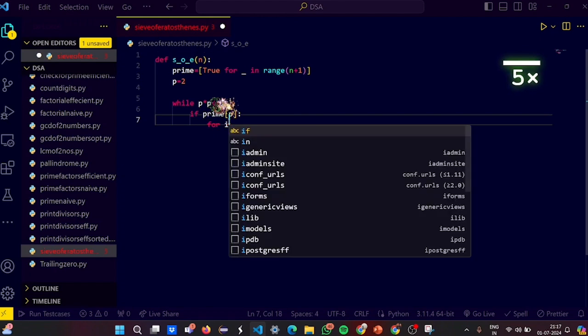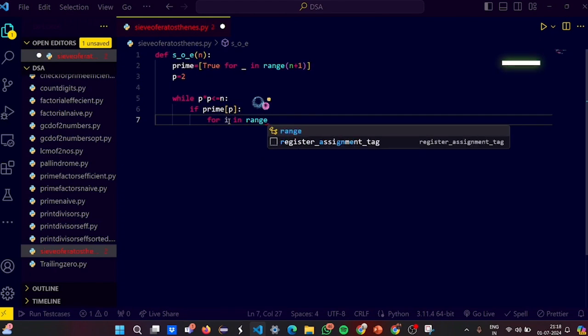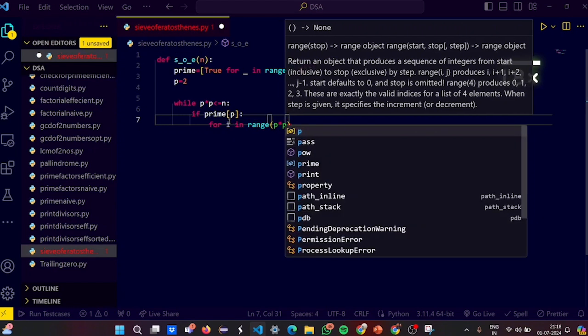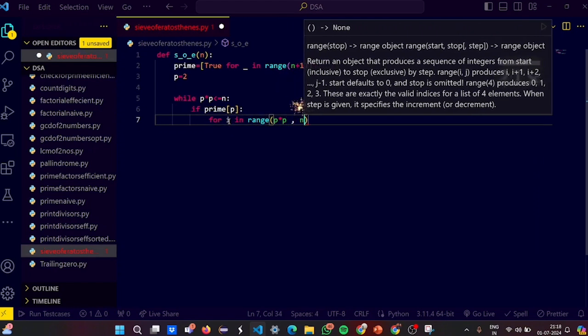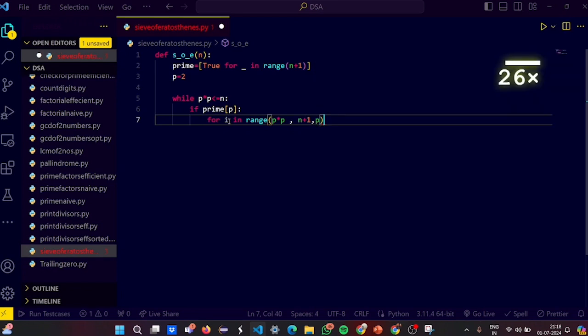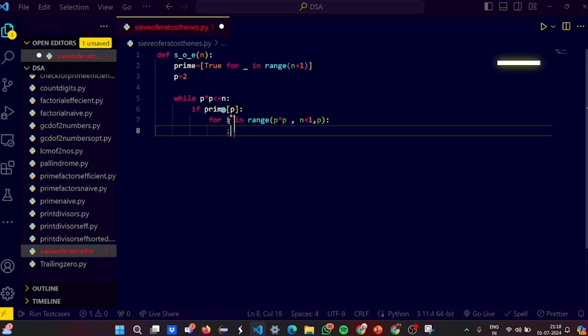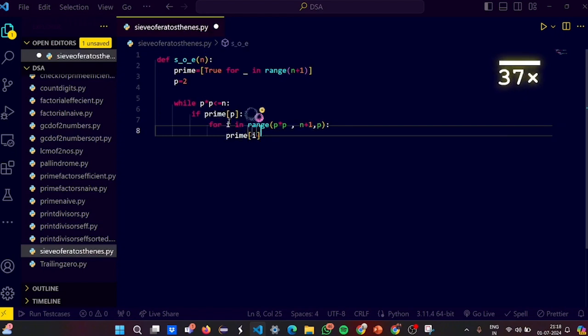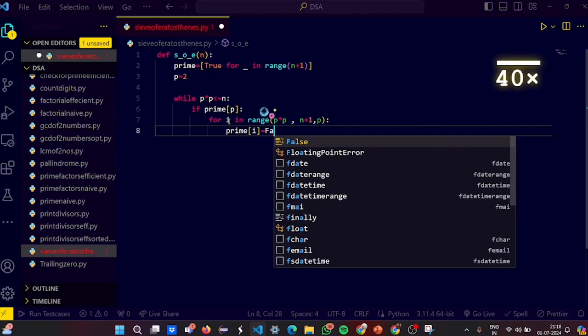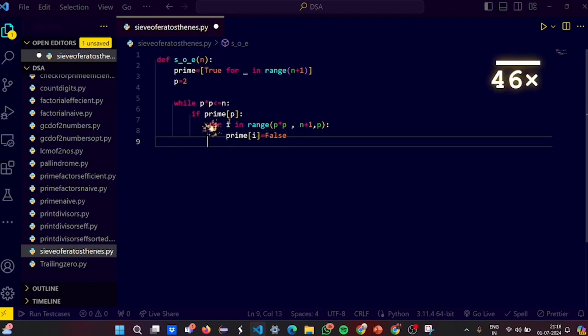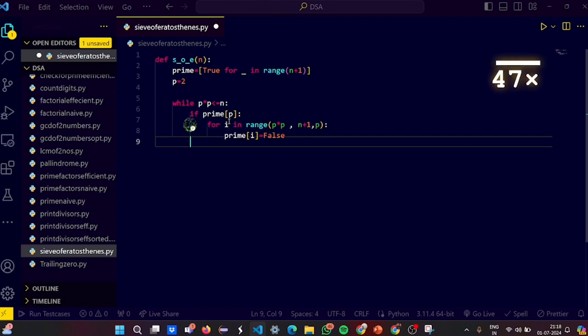What do you do? Update all the multiples of p that is greater than or equal to the square of it. Let's write down the loop: for i in range p square comma n plus 1 comma p. What do you do? Update the prime list. Prime i equals false. Done. Then our job is to increment. Let's increment now the p variable. Incremented.